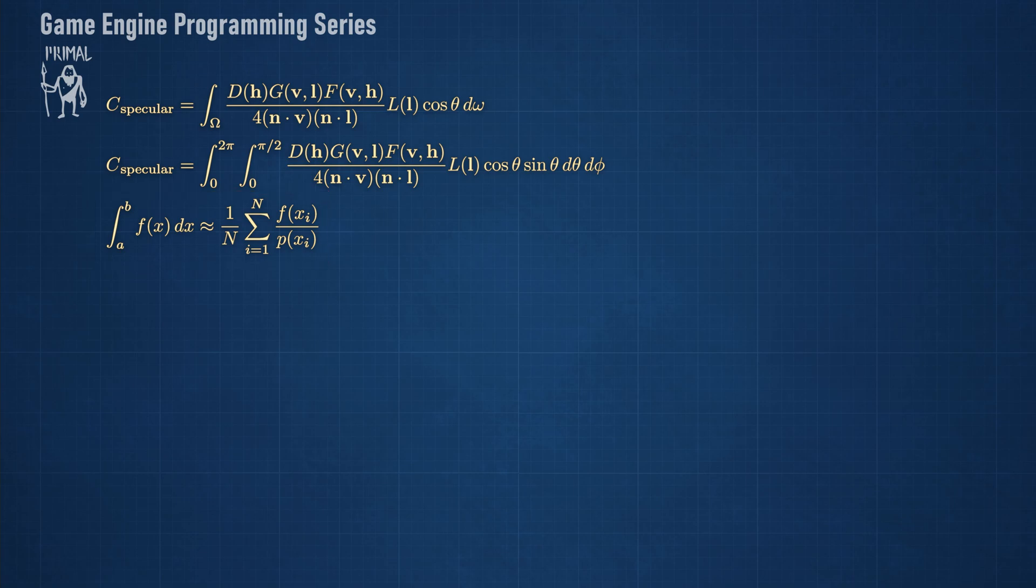We know that the sum will become more accurate if p resembles f. Looking at the specular BRDF we can see that the normal distribution function is the dominant term so we can choose this part to be the PDF. However d is a function of the halfway vector so we have to use the angles with respect to this vector.